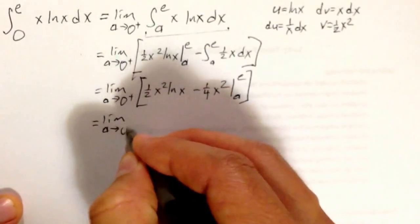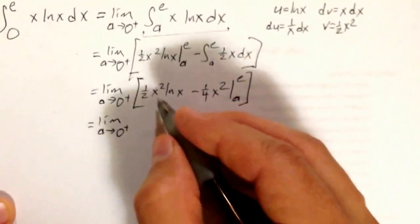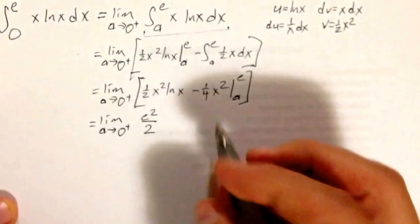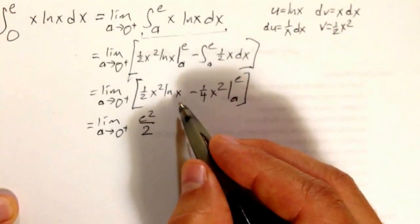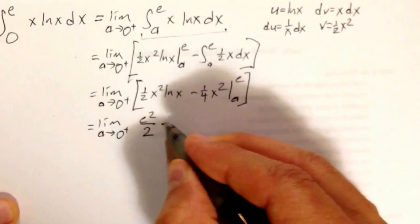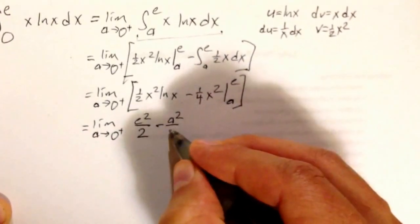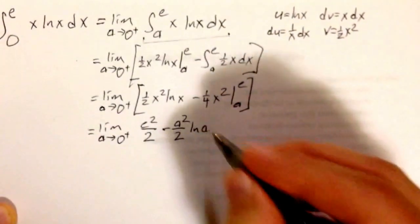Hold my limit outside just one step farther until I can evaluate. Plugging in e, I get e squared over 2 times natural log of e, which is 1, minus a squared over 2 times the natural log of a.